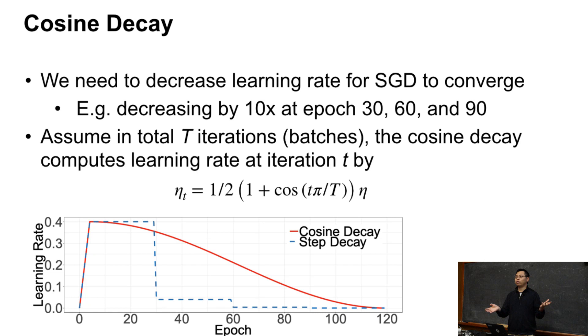But then we need to select this 30, this 10x, 30, 60, 90, all the things are hyperparameters. You need to choose for your algorithm. Well, if I don't want to choose, I can use a cosine function. So assume the capital T is the total iterations we have, total batches we have, and then at a particular iteration t, we can use a cosine function to decrease. The formula is eta_t equals 1/2 times (1 + cos(t pi / T)) times eta.